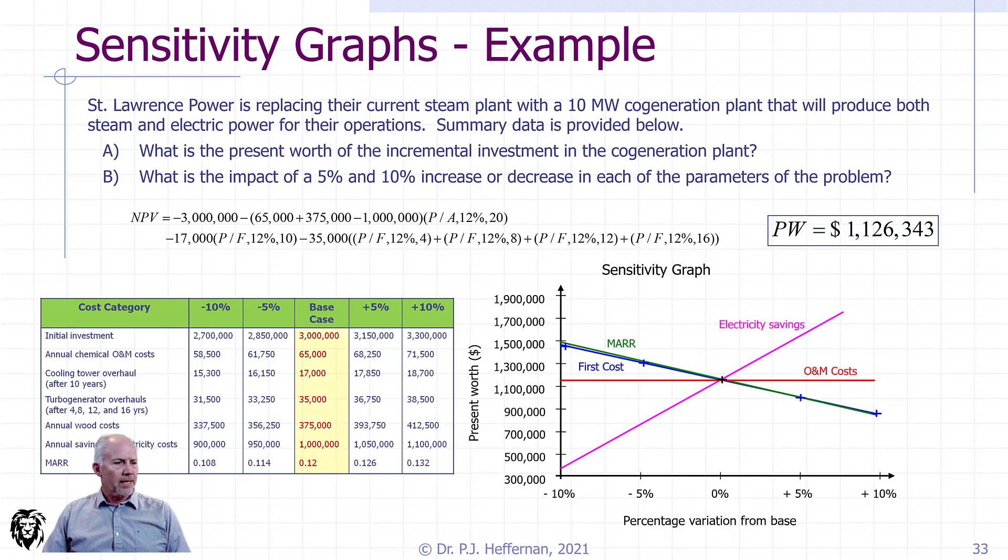That's the base case, the point in the middle. Each of these graphs, colored, will show which parameter is being assessed. Our first cost, our initial investment, is the blue row on the table, the blue line on the graph. It shows that it is sensitive to a degree, slightly sensitive, to estimates and first cost.